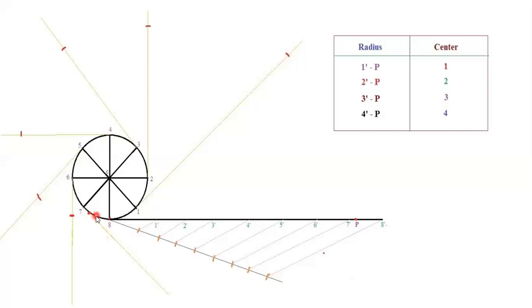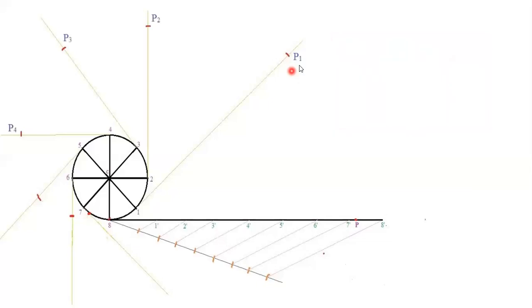The next step is naming the arcs. Name the arc on line 1 as P1, on line 2 as P2, on line 3 as P3, and so on: P4, P5, P6.